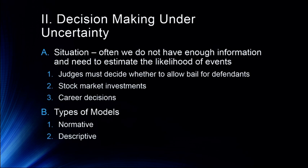There are two types of models that attempt to describe decision-making under uncertainty: normative models and descriptive models. Normative models are really based on math, and the original normative models were developed by economists. Descriptive models describe how people actually make decisions, which we'll get to in the next lecture.